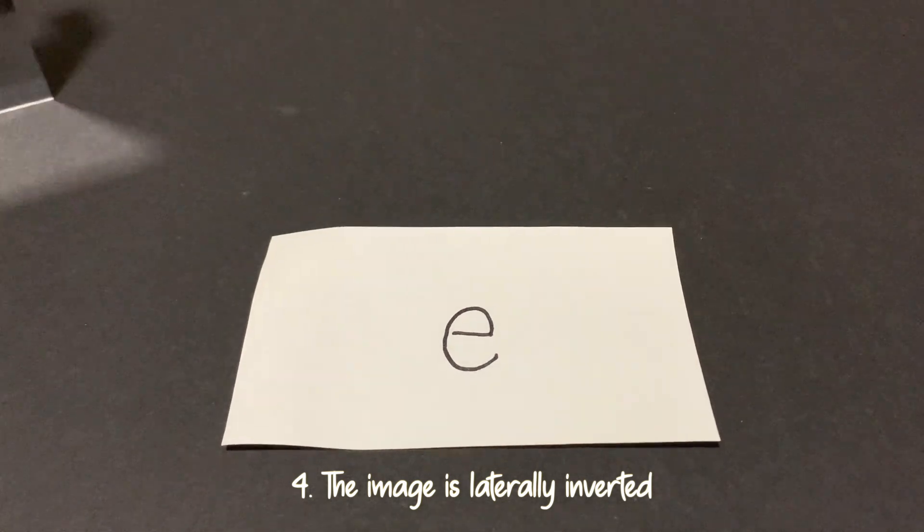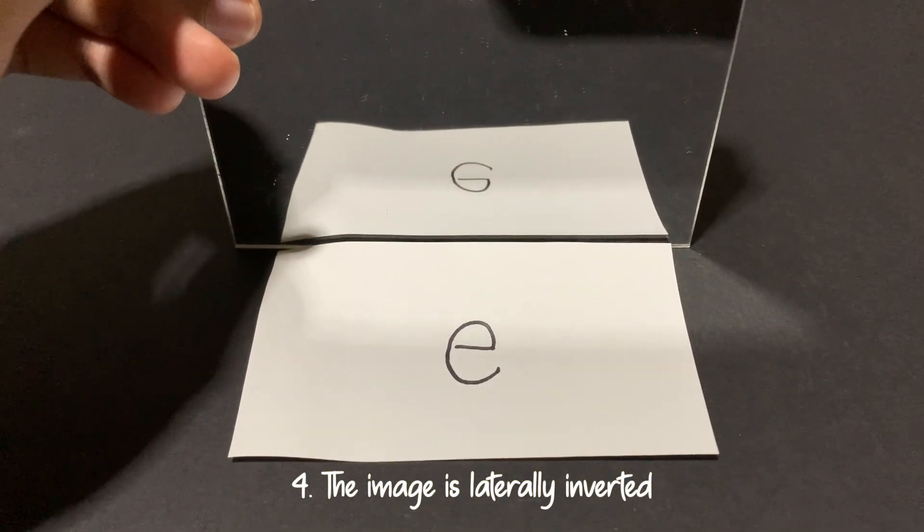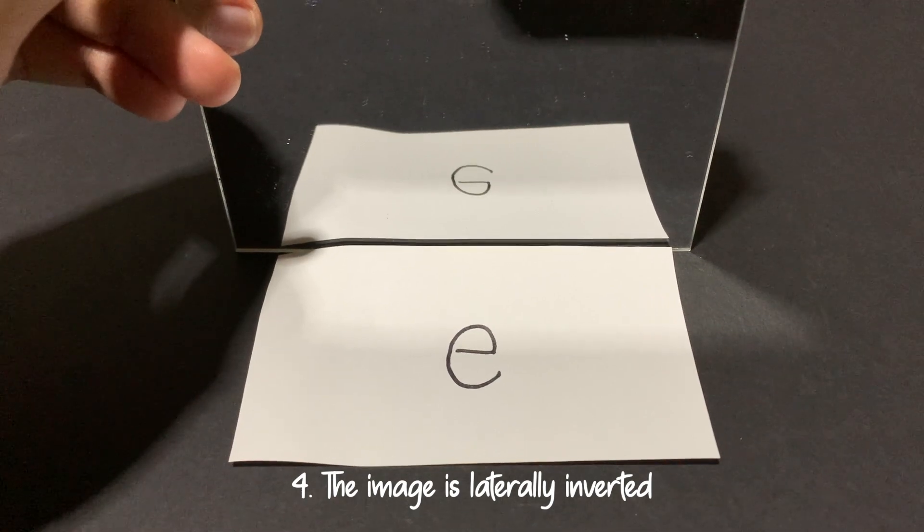Okay let's put our mirror and take a look. We find that the image is laterally inverted. This means that the left and right side are interchanged.